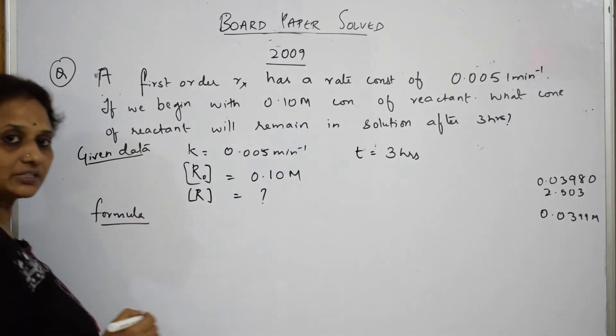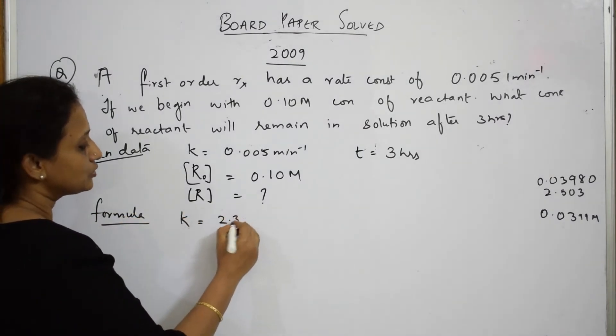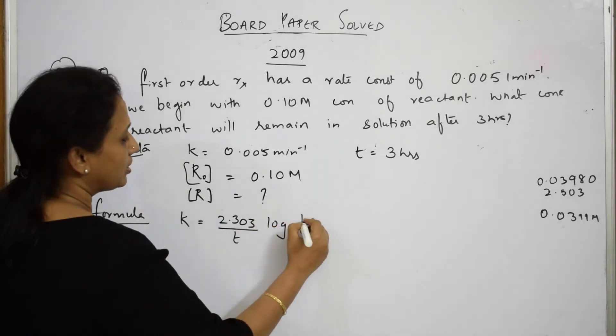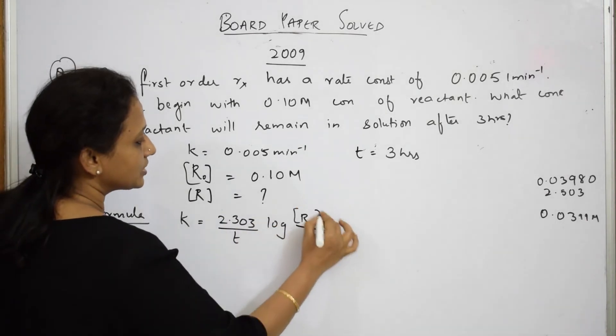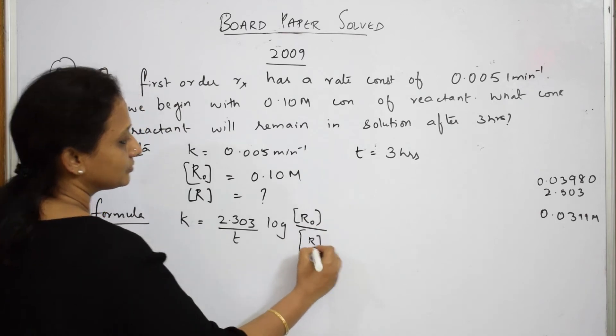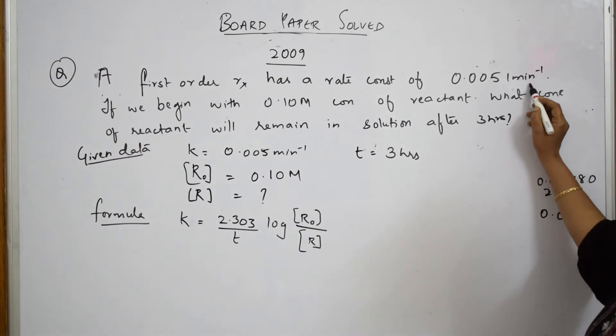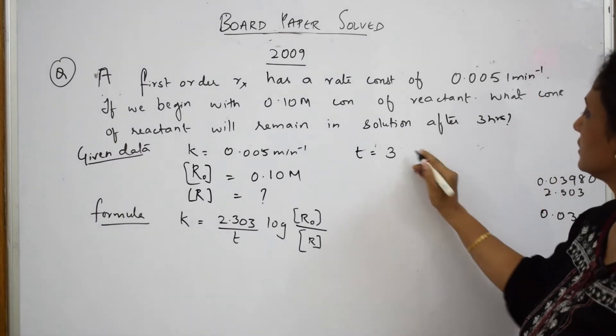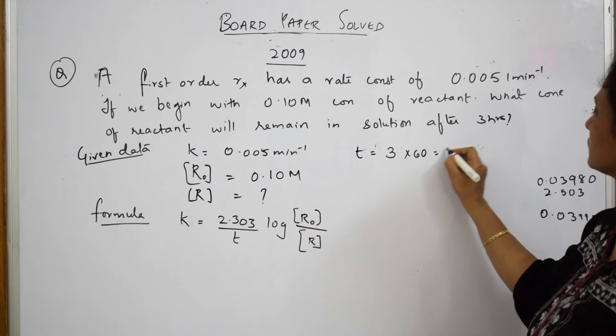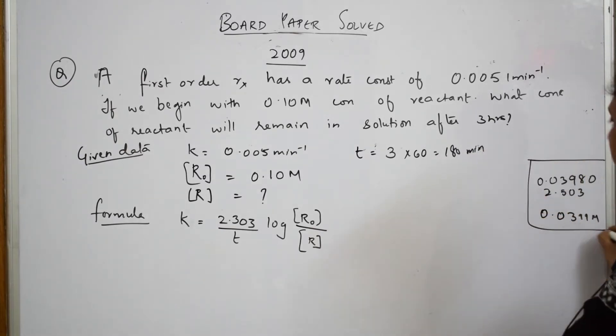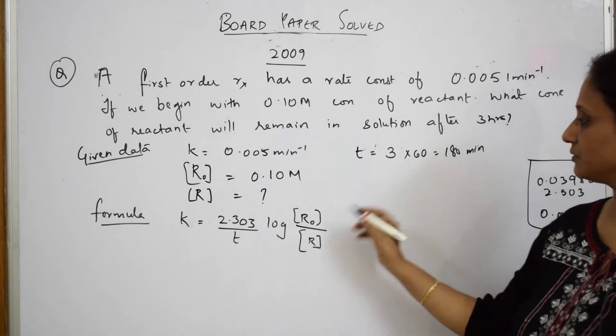Let us write the formula for this. For the first order rate equation, the formula given is K equals 2.303 by T log of R naught concentration by R. Now this is in minutes, this is in hours, so try to multiply with 60 to get this also in minutes, 180 minutes.